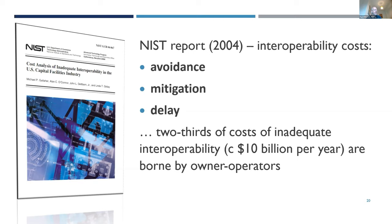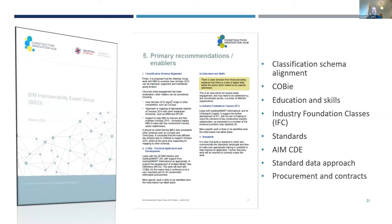Added project costs also arose from waste, rework or scrapped material as a result of poor interoperability, as well as delays to project completion and lengthened periods where a facility is not in normal operation. Two-thirds of these costs are borne by owner-operators, but that still leaves a hefty $5 billion every year borne by designers and contractors. This is one of the reasons the BIM Interoperability Expert Group is addressing the issue. It has identified a number of work streams: classification scheme alignment, COBE, education and skills, IFC, standards, asset information management, common data environment, standard approaches to data, and importantly, procurement and contracts.